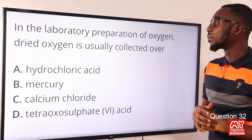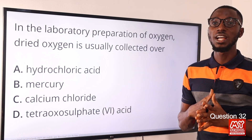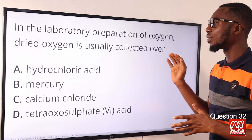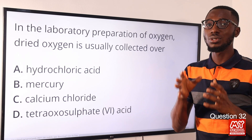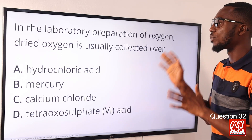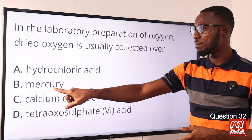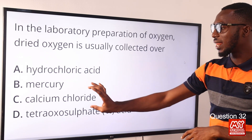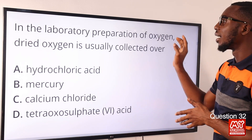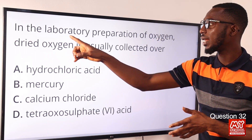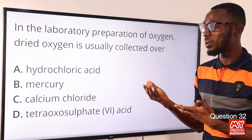Question 32. In the laboratory preparation of oxygen from the decomposition of potassium trioxochlorate 5, the dried oxygen — how do you dry the oxygen? By using concentrated H2SO4 or anhydrous calcium chloride. Once it is dried, if you want to collect it, it will be over mercury. The correct answer here is option B for mercury. Dried oxygen is usually collected over mercury. Option B is your correct option.